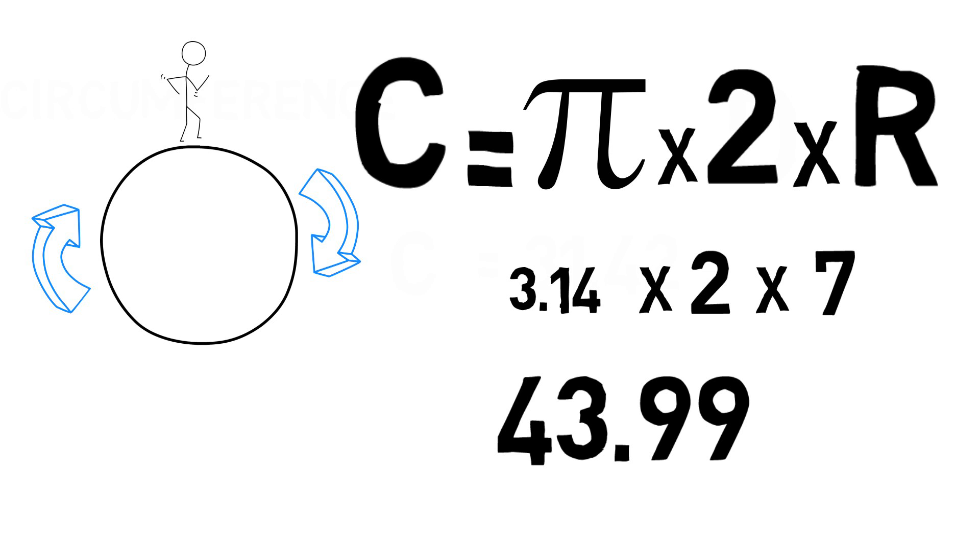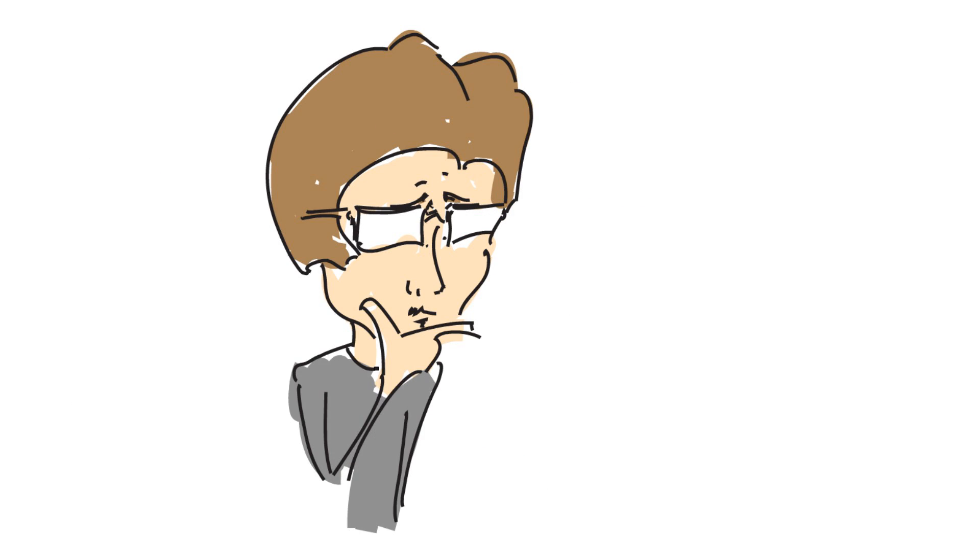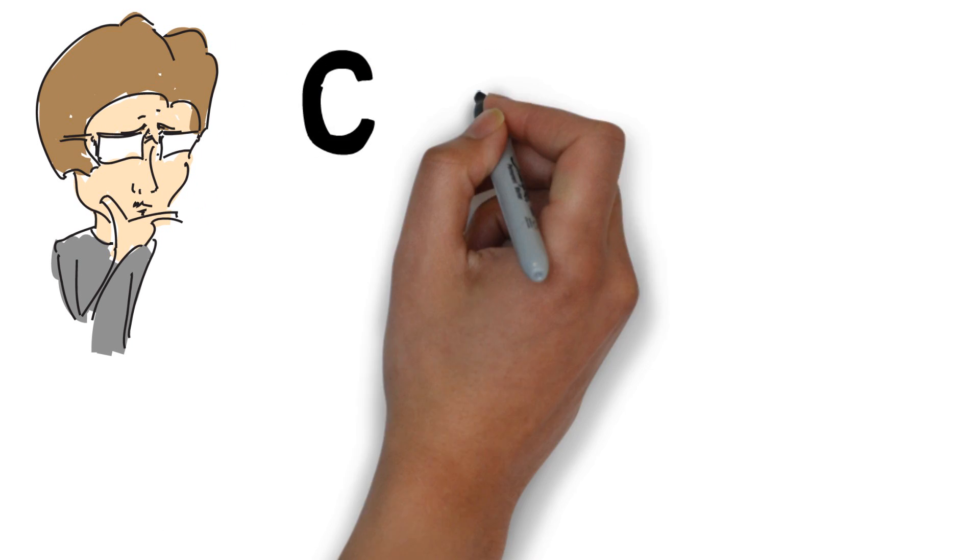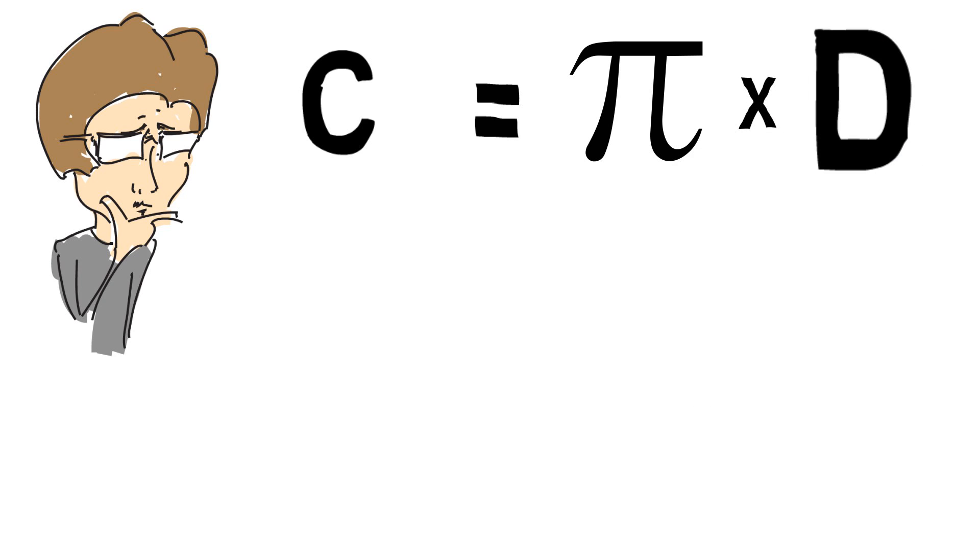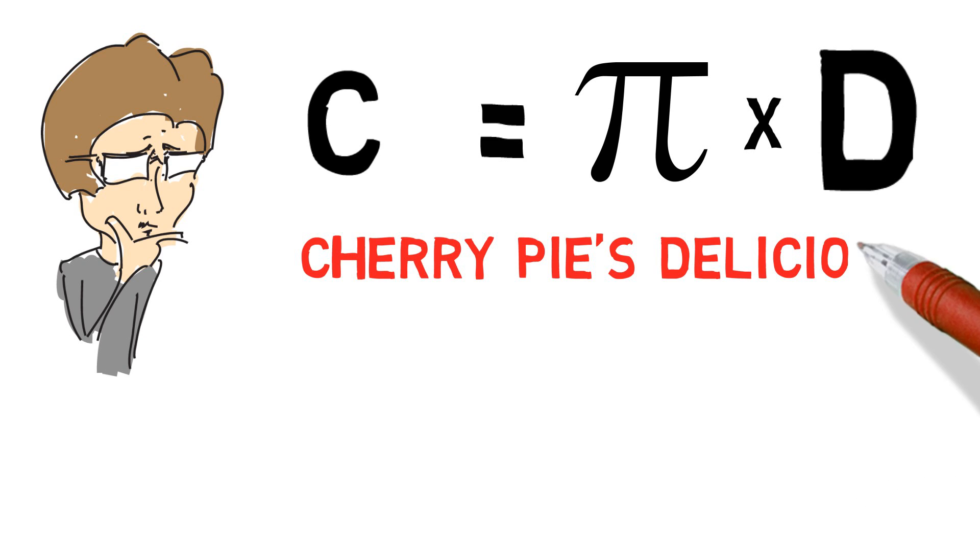Now having a formula is great but it's important to remember it. So here's a little tip to remember our formula. So let's write the formula once again. C is equal to pi times D. Now I want you to remember the sentence. Cherry pies delicious. Let's add some images to make things more visual.